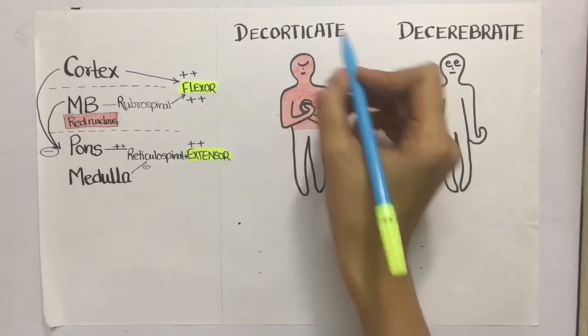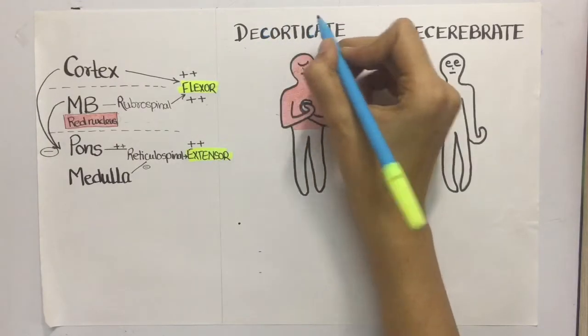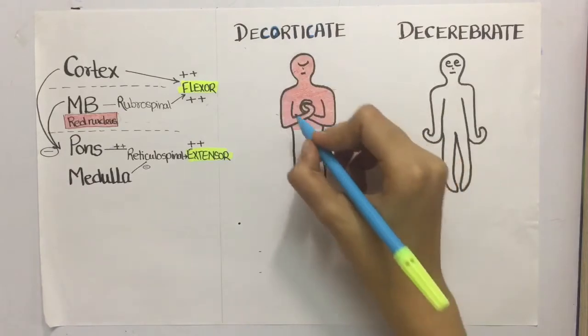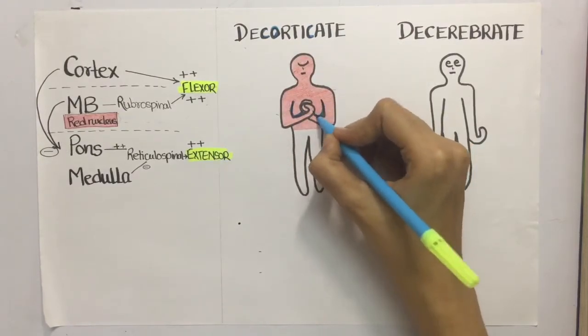In decorticate rigidity as we see there is one and two C's and there is an O, so it can be remembered as the upper limbs form a C over the chest forming this O.